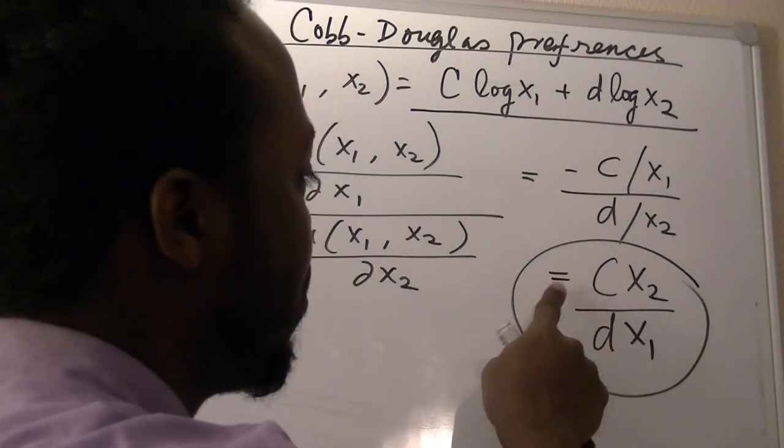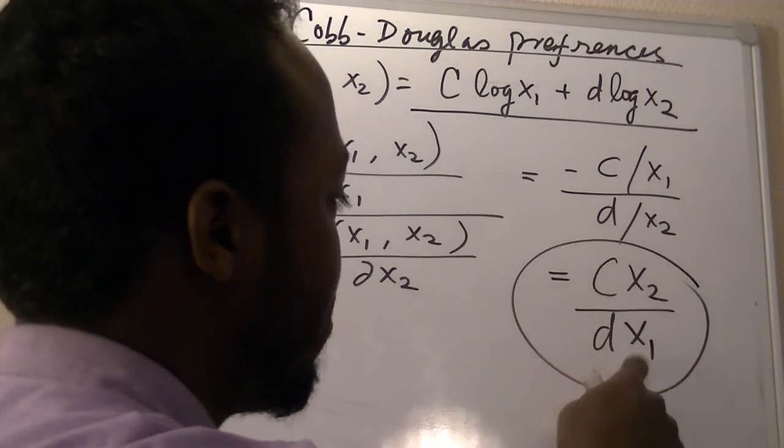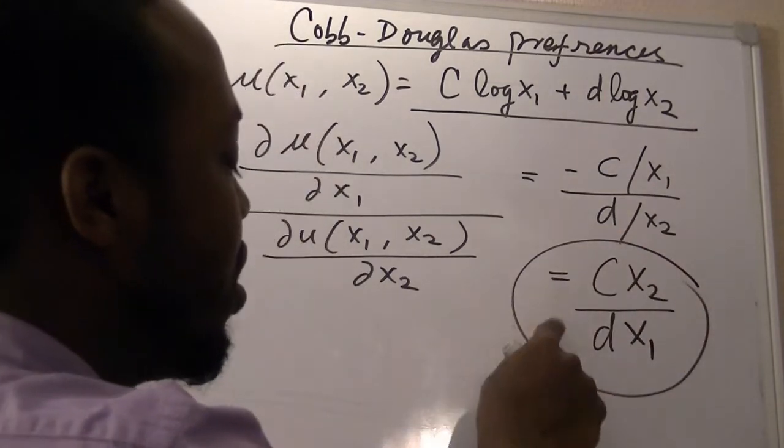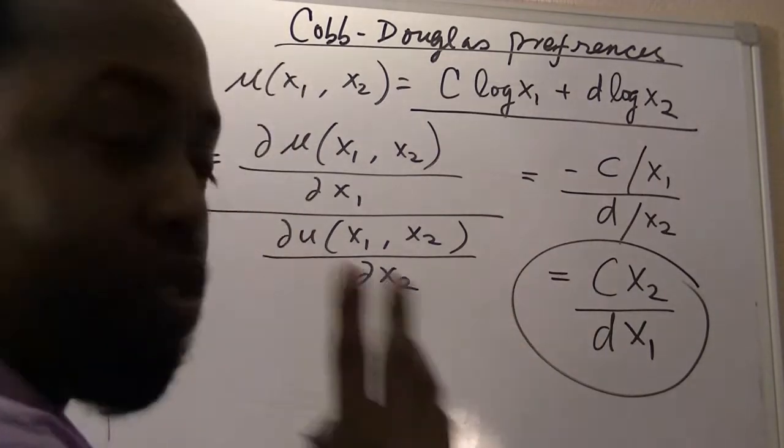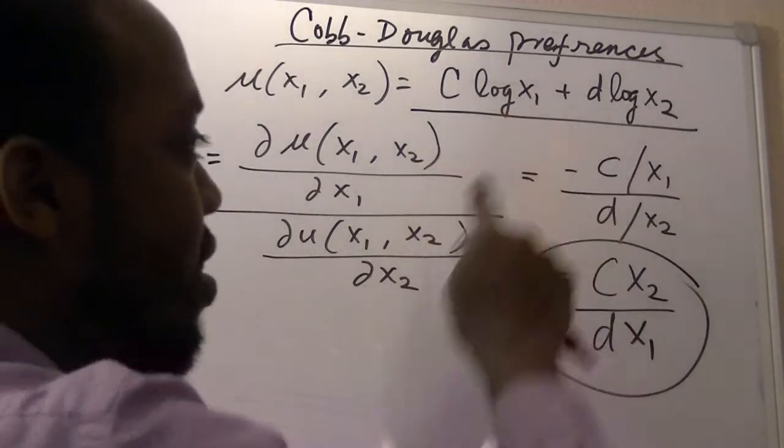The marginal rate of substitution is equal to c times x2 divided by d times x1, which means it only depends on the parameters and the quantities of the two goods, and not the way we represent the utility.